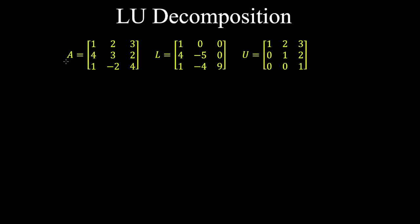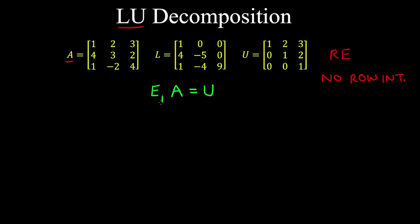An LU decomposition of a square matrix A can be found by reducing A into row echelon form using Gaussian elimination with elementary row operations, assuming no row interchanges are performed. Therefore, A has an LU decomposition that may not be unique. Reducing A to row echelon form means we obtain an upper triangular matrix by multiplying A by elementary matrices E1, E2, and so on up to ER.